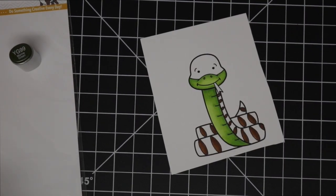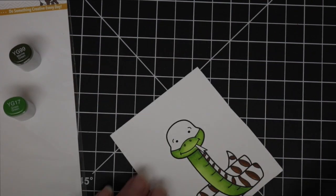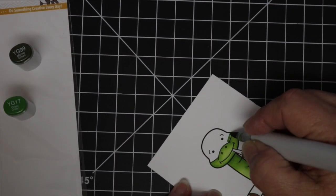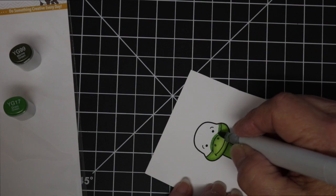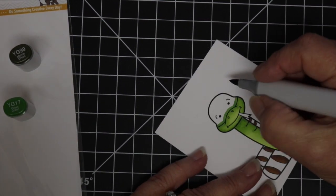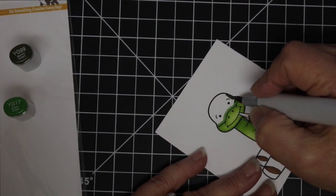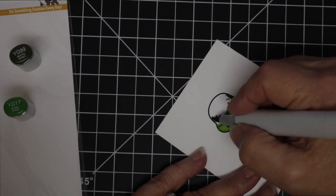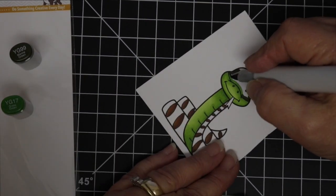I finished his little brown markings so now I'm going to come back in with the YG99 and the YG17 and finish up his face and his head and I will also use these two colors to do the rest of his body.